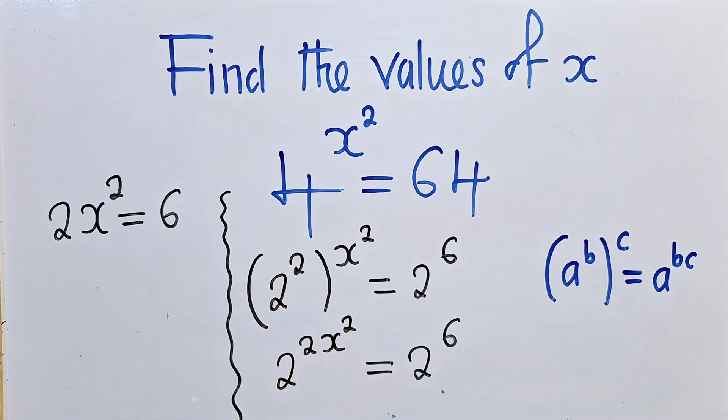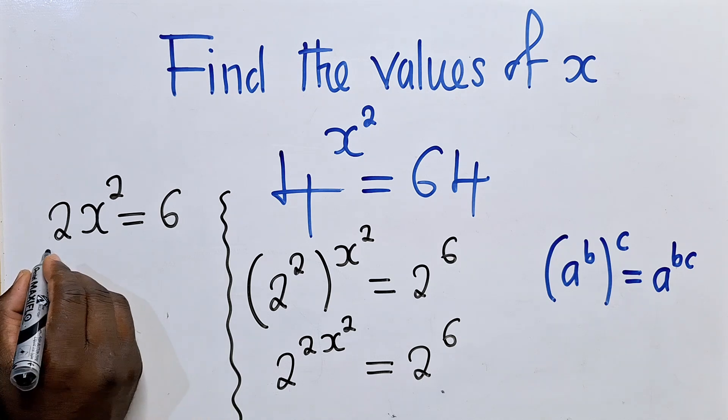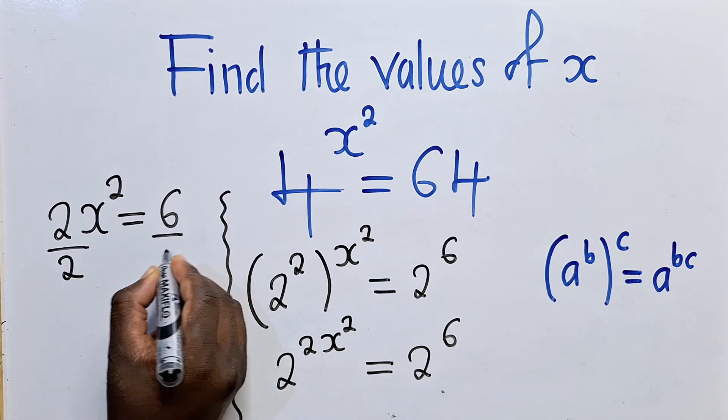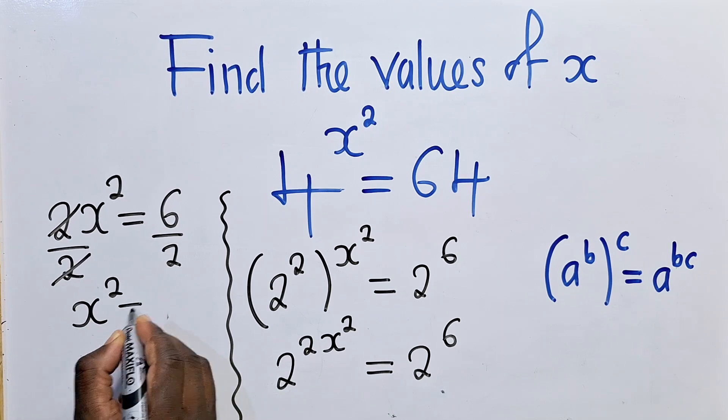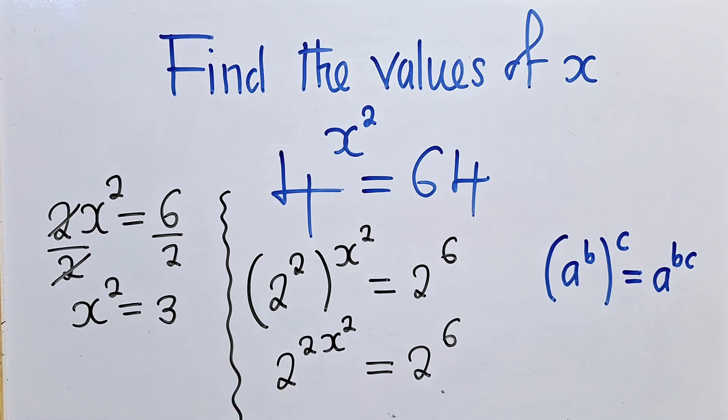I hope you are able to see. So this power equal to the power right here. We divide by 2 by 2. This and this will go. x power 2 will simply be equal to 3.